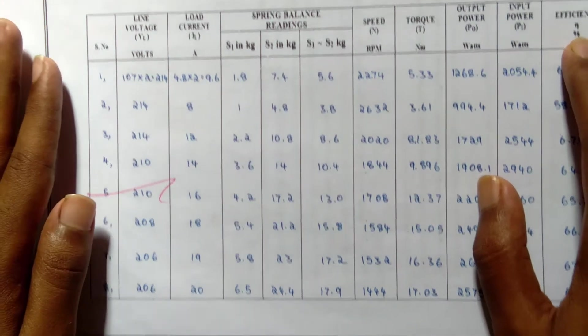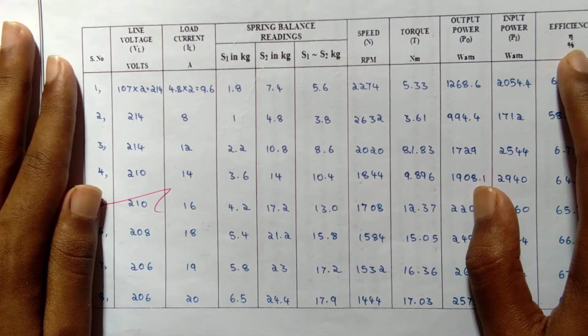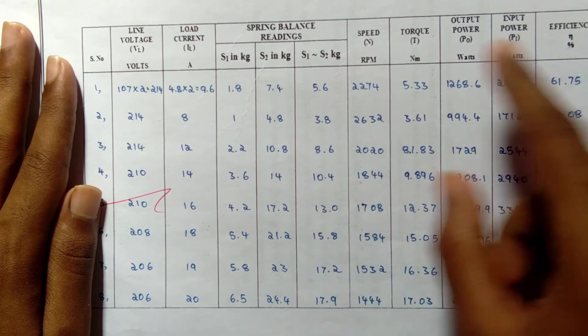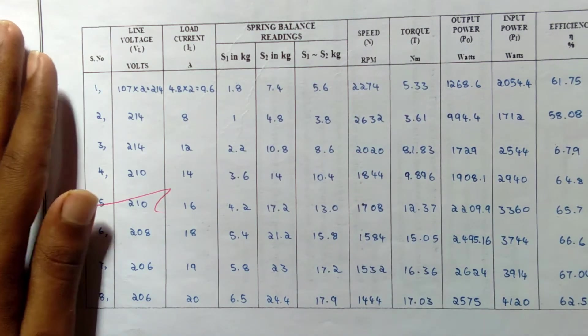The speed, torque, output power, input power, and efficiency using the formula we're going to find. The speed is noted down using the tachometer.